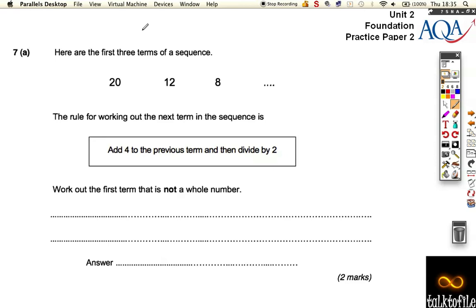Question 7. Here we've got the first three terms of a sequence, and the rule for working out the next term is add 4 and divide by 2.